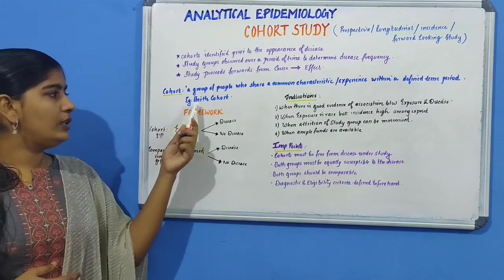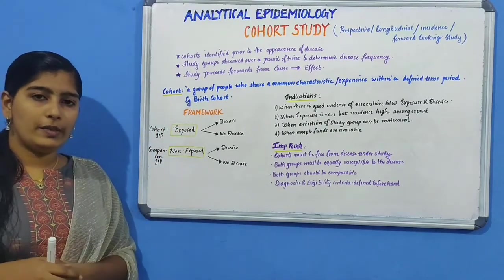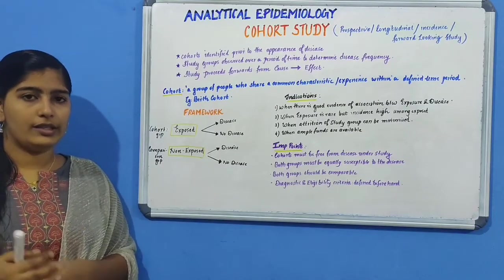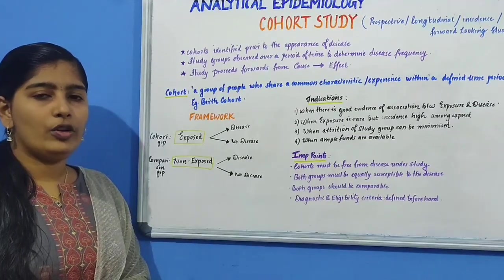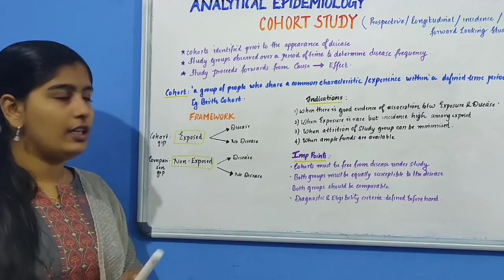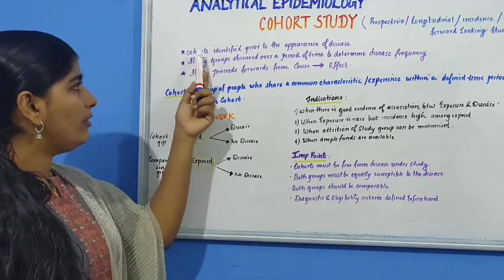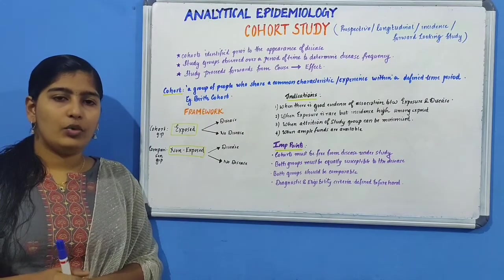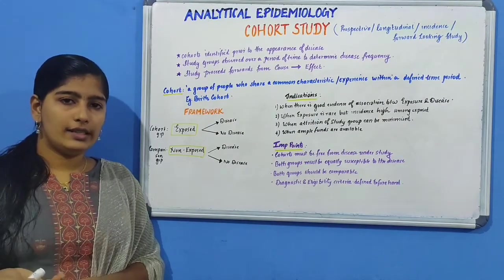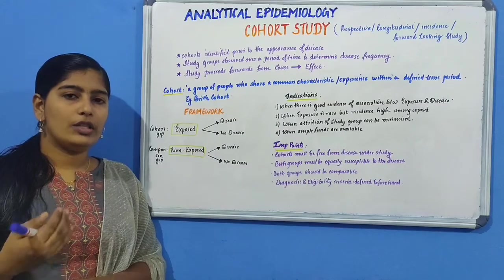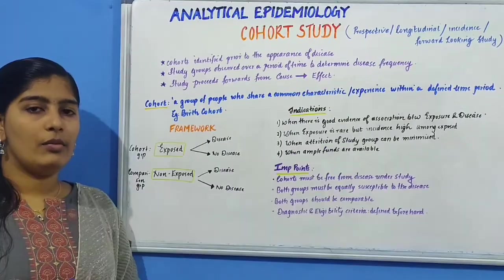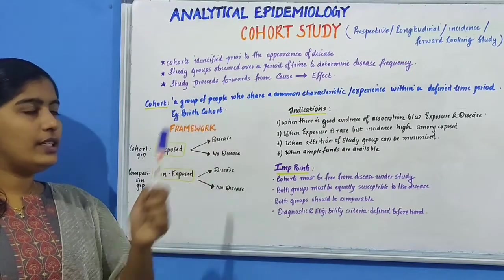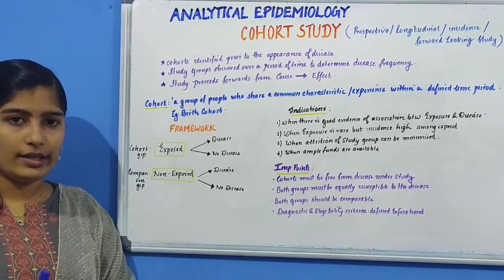One example for this is birth cohort — a group of people who have been born on the same day or the same year. Moving on to the salient features of cohort study, cohorts are identified prior to the appearance of disease. In case control study, both the exposure as well as the disease have occurred prior to the onset of the study. But here, the disease has not occurred yet.